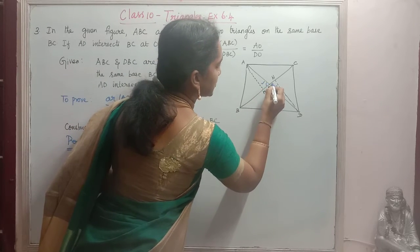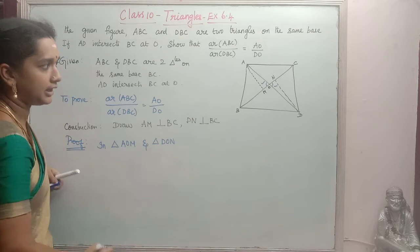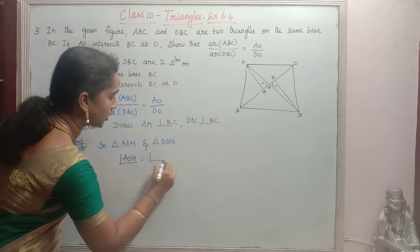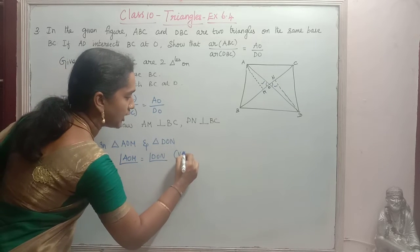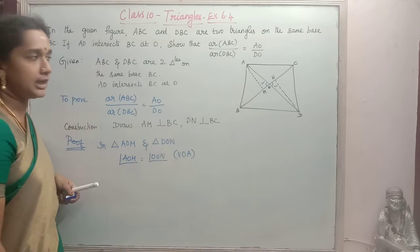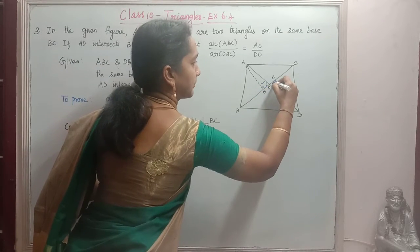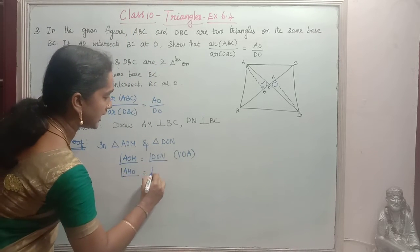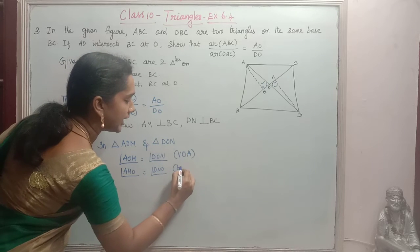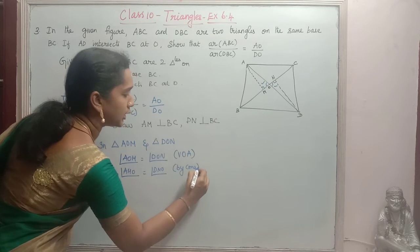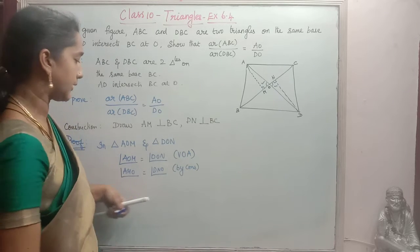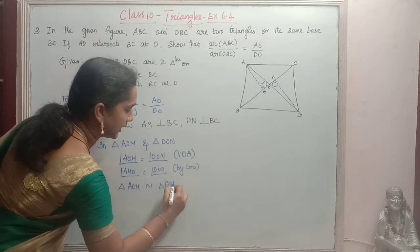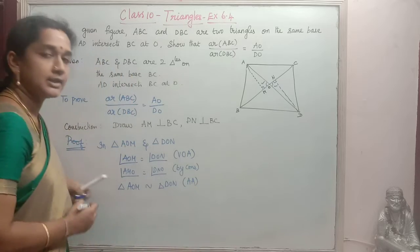In triangle AOM and triangle DON: angle AOM is equal to angle DON, as vertically opposite angles are equal. Also, angle AMO is equal to angle DNO, both equal to 90 degrees, by construction.